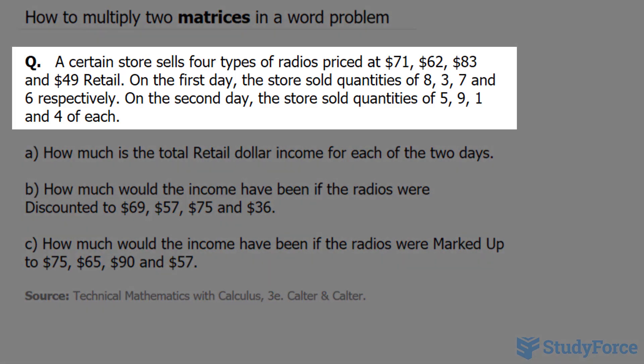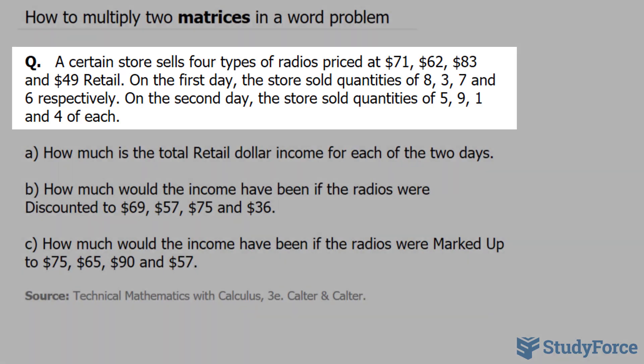A certain store sells four types of radios priced at $71, $62, $83, and $49 retail. On the first day, the store sold a quantity of 8, 3, 7, and 6, respectively. On the second day, the store sold quantities of 5, 9, 1, and 4 of each.